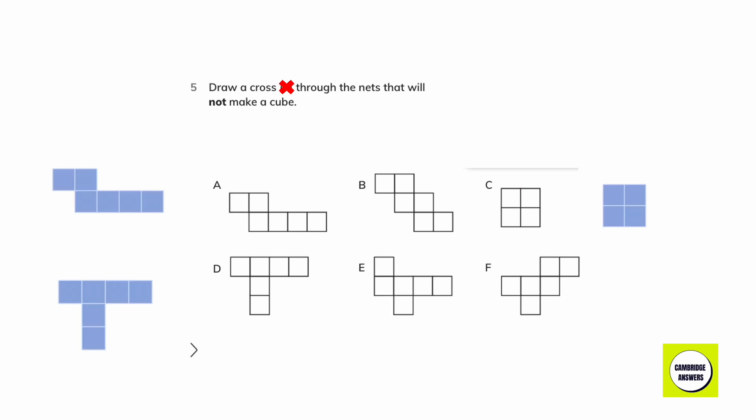Draw a cross through the nets that will not make a cube. The first net that will not make a cube is A. The second net that will not make a cube is D. The third net that will not make a cube is C.